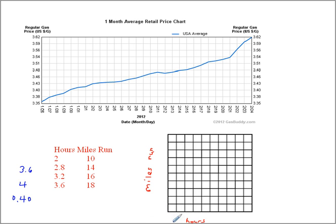I won't write every label to avoid cluttering the graph, so I'll skip around: 0.8, then 1.6, then 2, then 2.4, 2.8, 3.2, 3.6, and 4.